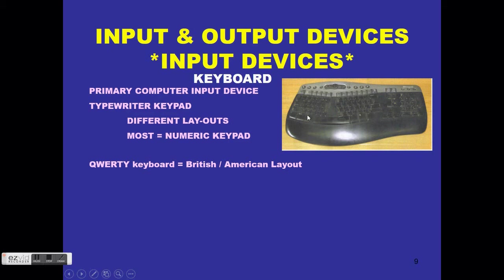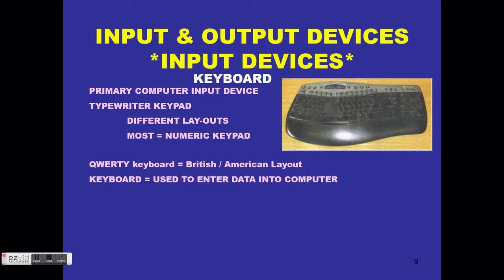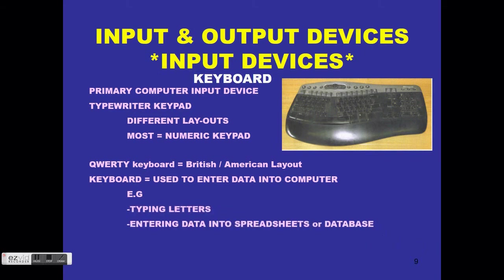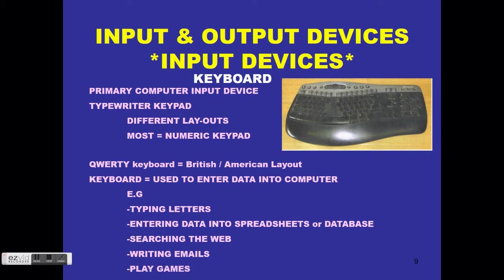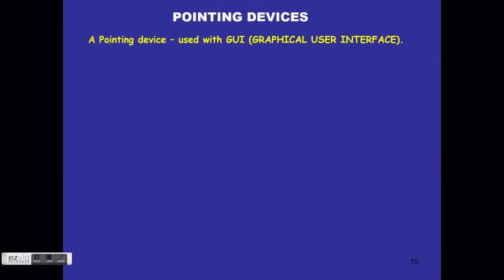The QWERTY keyboard is the British/American layout, named after the keys in the middle row: Q, W, E, R, T, Y. A keyboard is used to enter data. The CPU performs processing which gives data structure so it becomes information — we enter data, not information. Examples include typing letters, entering data into a spreadsheet or database, searching the web, writing emails, and playing games.